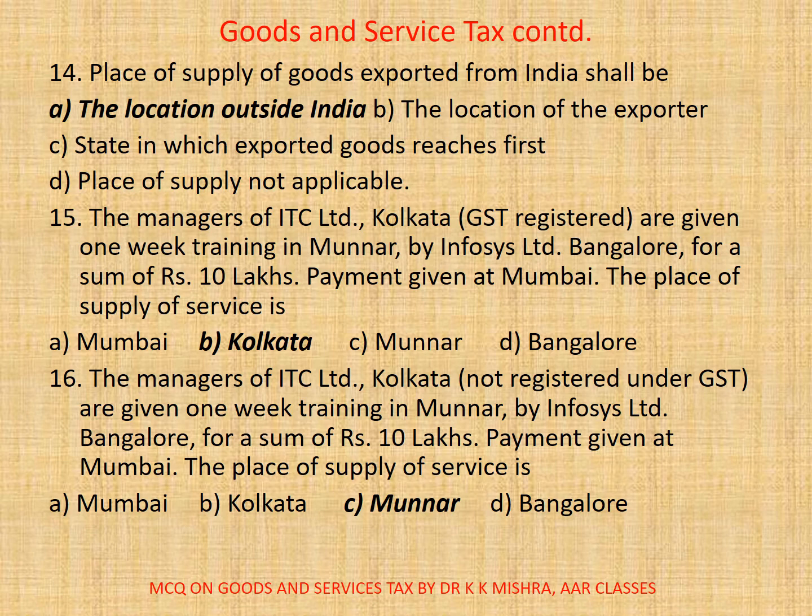Question 15: The managers of ITC Limited, Kolkata, GST registered, are given one big training in Munnar by Infosys Limited Bangalore for a sum of rupees 10 lakhs. Payment given at Mumbai. The place of supply of service is — A. Mumbai, B. Kolkata, C. Munnar, D. Bangalore.